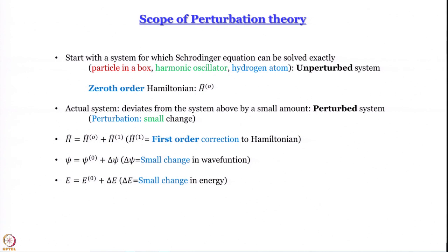If the unperturbed system has an energy of 10 units and the perturbed system has an energy of 50 units, then perturbation theory will not work. You cannot work like this because δE is going to become greater than E⁽⁰⁾, or even a sizable fraction of E⁽⁰⁾. For the rest of this module we will try to build an expression for δE. The perturbed wave function δψ, or ψ, can be written as a linear combination of the ψ⁽⁰⁾s.